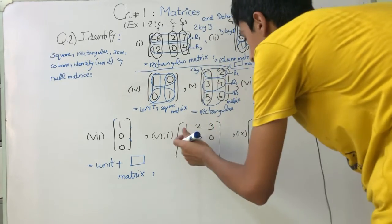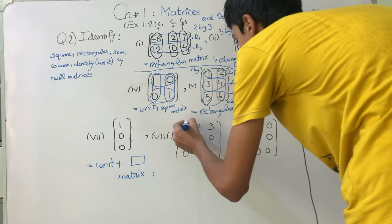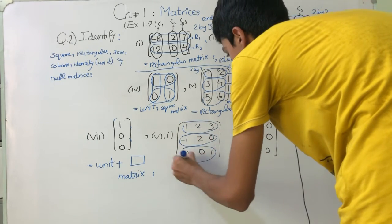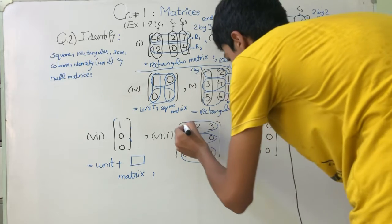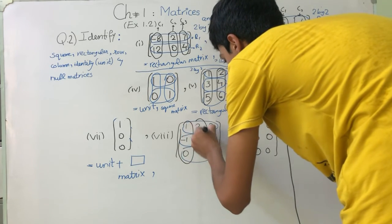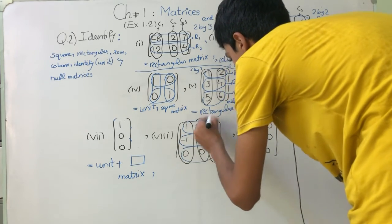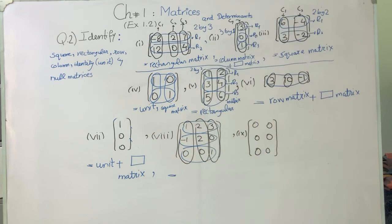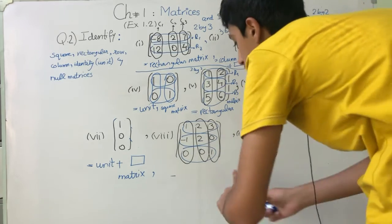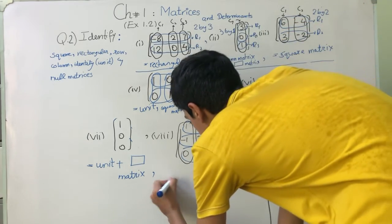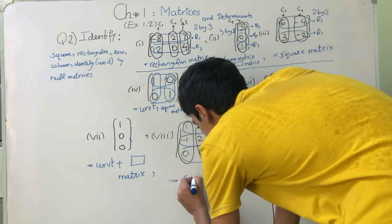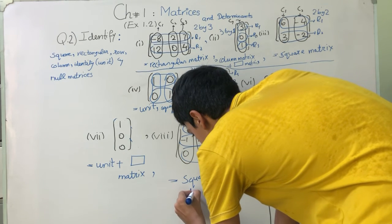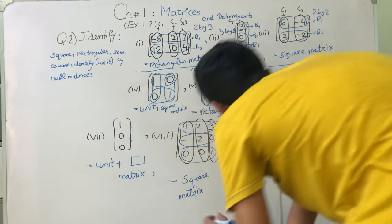The next matrix is [1, 2, 3; -1, 2, 0; 0, 0, 1]. Row number 1, row number 2, row number 3, and column number 1, column number 2, column number 3. Three rows and three columns — the number of rows is equal to the number of columns, so this is a square matrix.